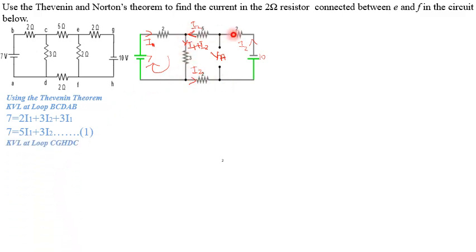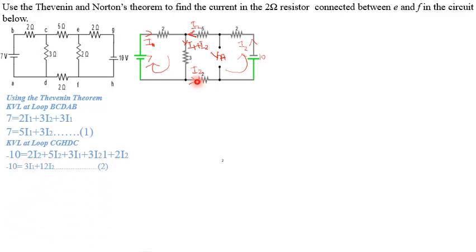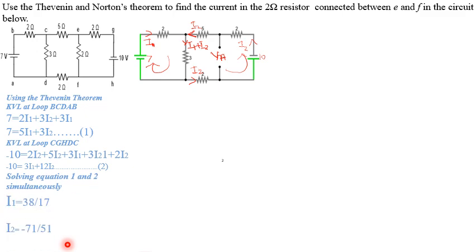We then take the bigger loop starting from C-G-H-D-C in the anti-clockwise direction. Here we are moving from a higher potential to a lower potential, so the 10V becomes negative. Writing the equation: 10 = 2·I2 + 5·I2 + 3·(I1 + I2). Simplifying and solving both KVL equations simultaneously using a calculator, we get I1 = 38/17 and I2 = −71/51.